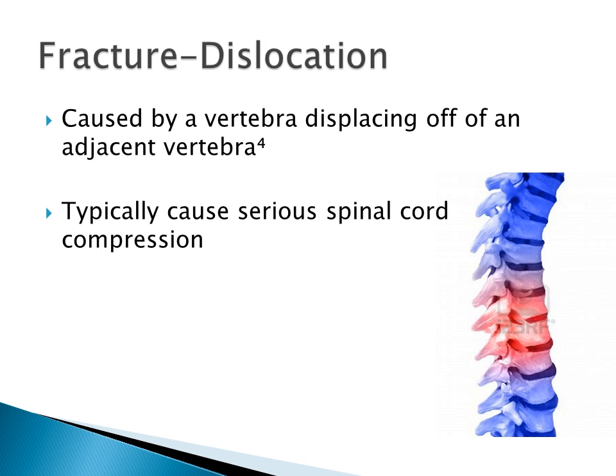A fracture dislocation is a displacement of a vertebra off of an adjacent vertebra. This type of fracture can cause compression of the spinal cord and can lead to further sequela depending on the severity of the fracture.